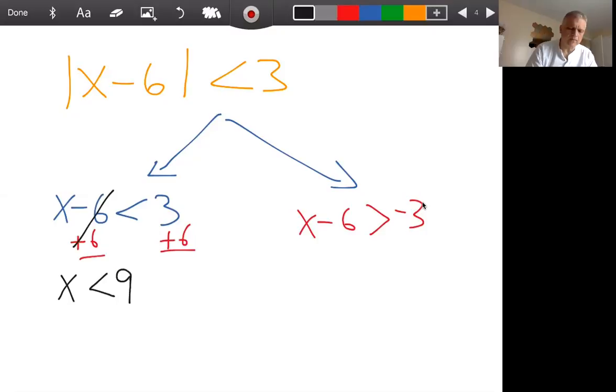All right, now we're gonna do the same thing over here on the other side. We're gonna go plus 6 plus 6 again. So that gives us X because these cancel, and now it's greater than 3.